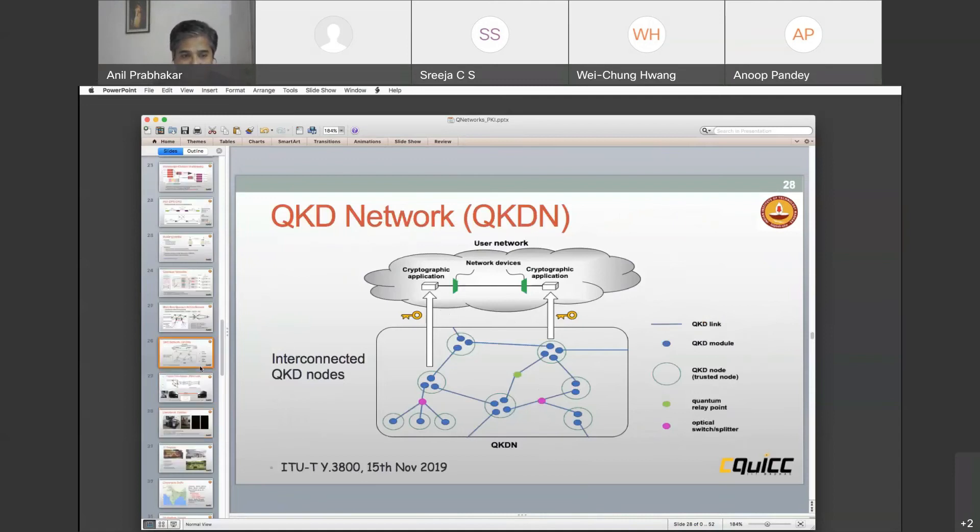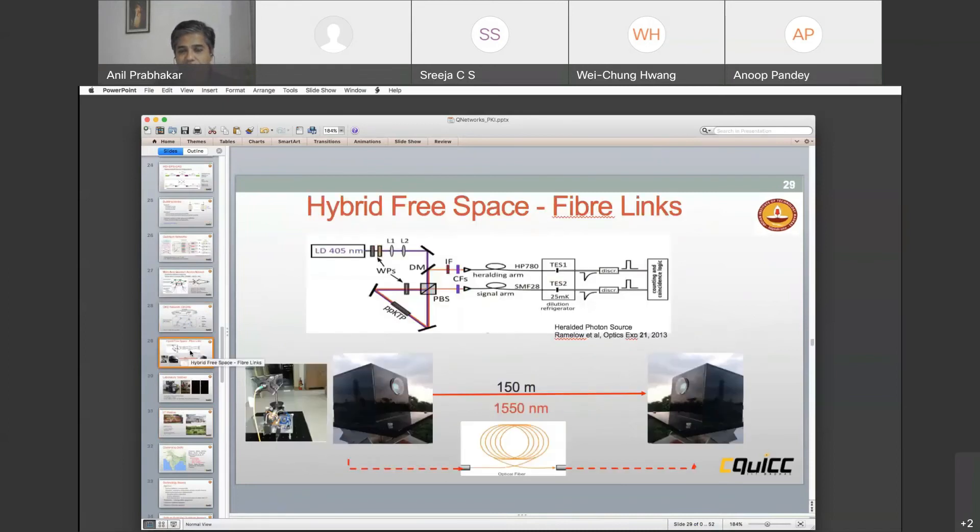Another way to do it is to actually use free space and we can also run it as line of sight, but you cannot go very far. You can do a few kilometers. Maybe you can even do 20 kilometers, but the efficiency keeps dropping down. But all of these things are possible and that's what we attempt to do.